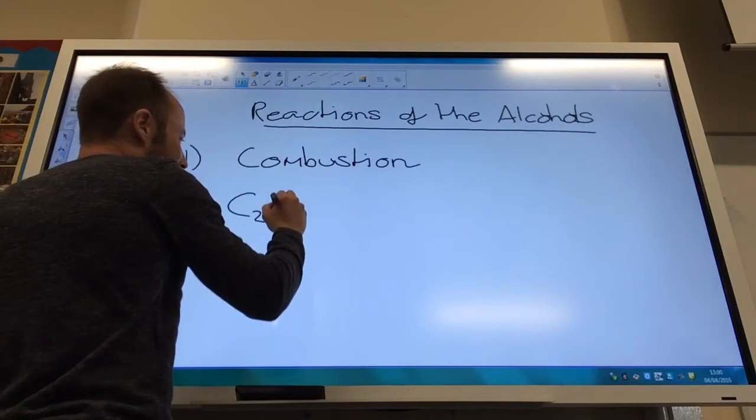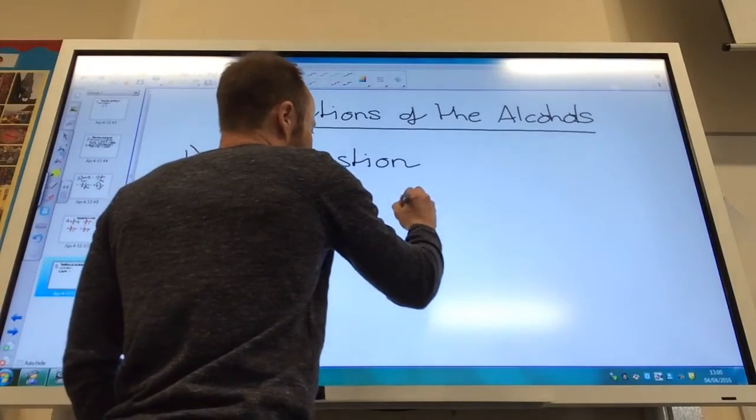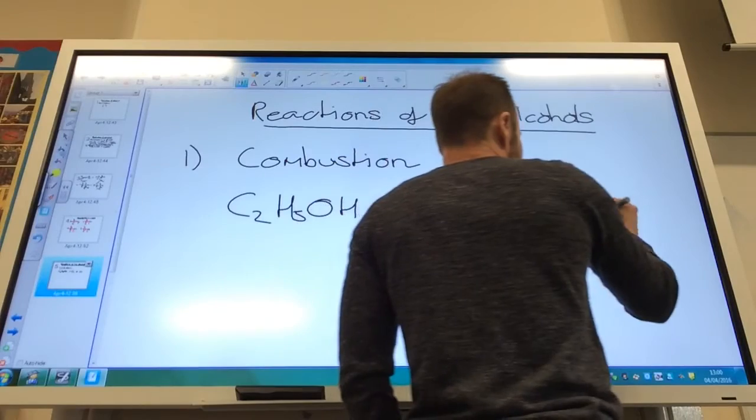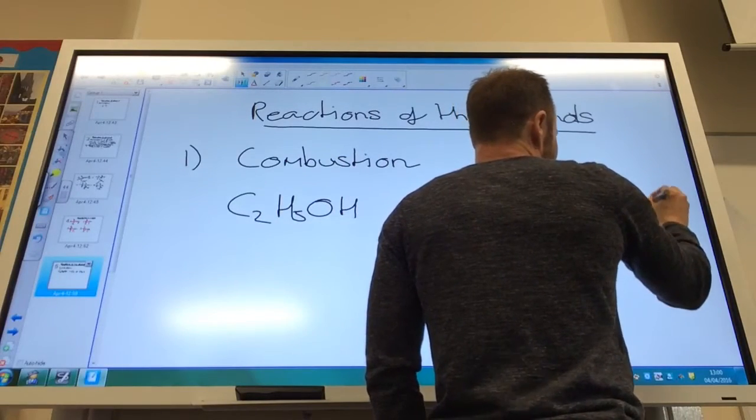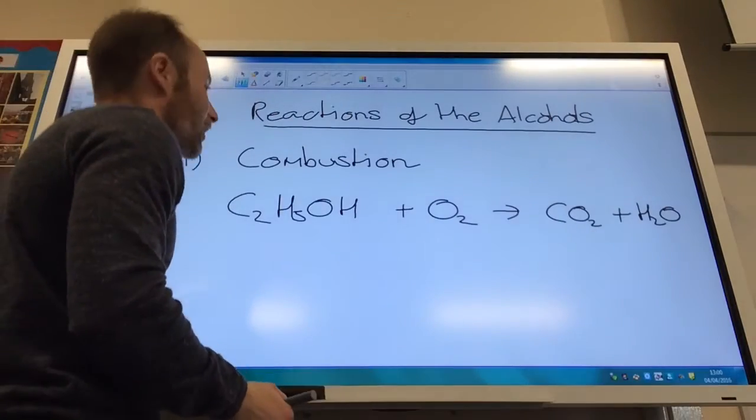So if you take ethanol, for example, C2H5OH, you burn it in oxygen. You're going to make carbon dioxide and water. Now, the main mistake people make is they don't balance this with respect to oxygens.